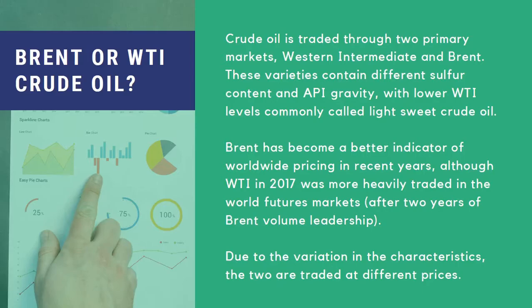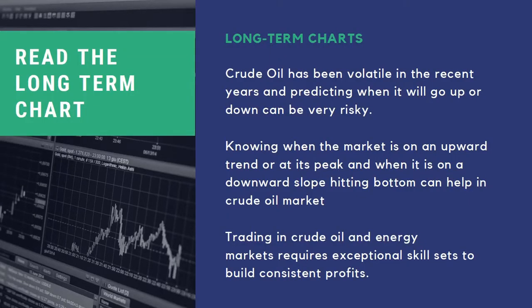How to read the crude oil charts on a long-term scale: crude oil has been volatile in recent years and predicting when it will go up or down can be risky. As of December 26, 2018, the price of crude oil had been on a downward trend — on Monday, prices fell up to six percent. Knowing when the market is on an upward trend or at its peak, and when it is on a downward slope hitting bottom, can help in trading the crude oil market. Trading in crude oil and energy markets requires exceptional skill sets to build consistent profits.